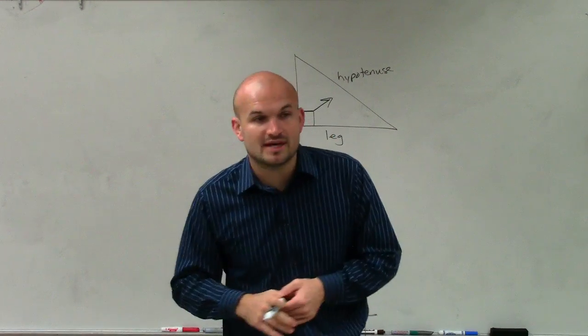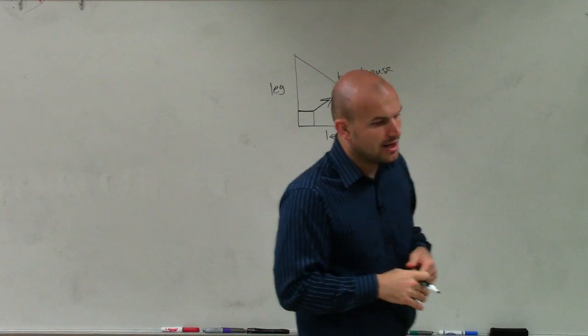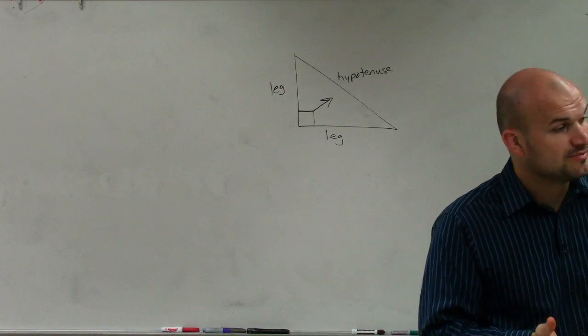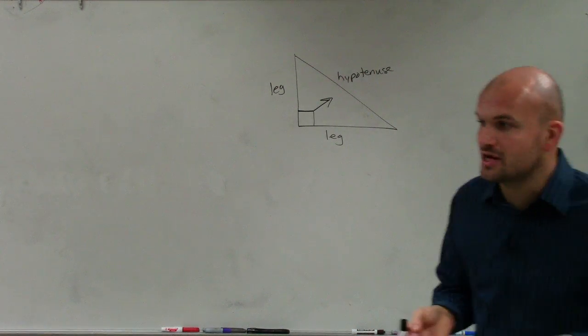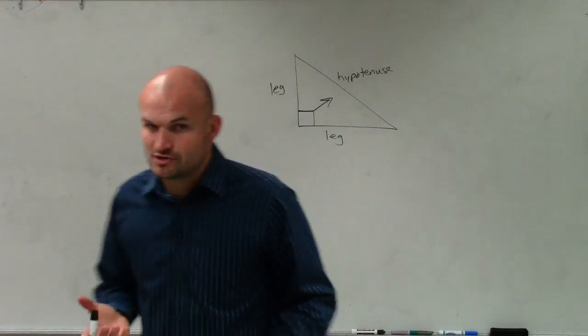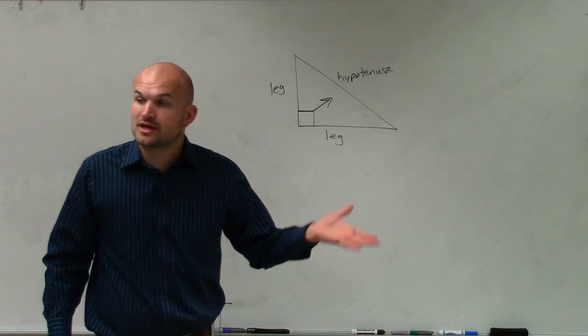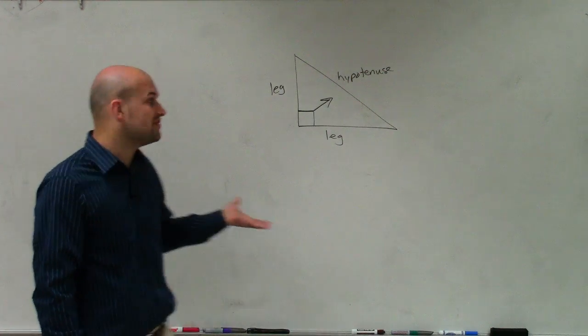But now what I'm going to do is I'm going to give you guys two different options, two different things to be able to relate. Because now what we're going to do is we're going to start talking about the angles within a right triangle. Not always special right triangles of 30, 60, 90, or 45, 45, 90.